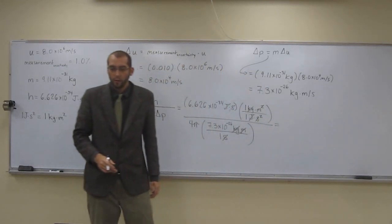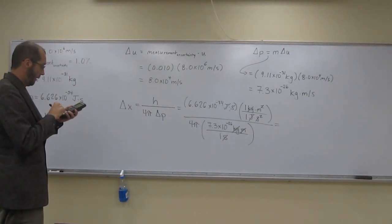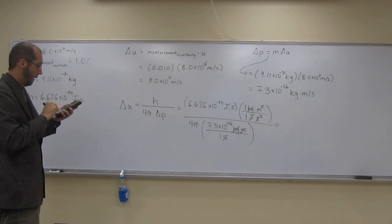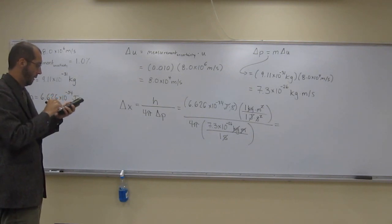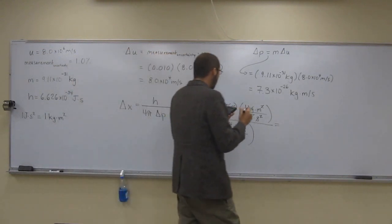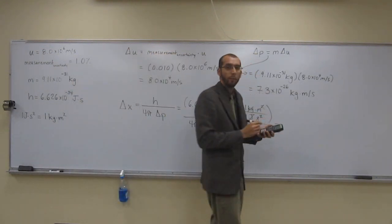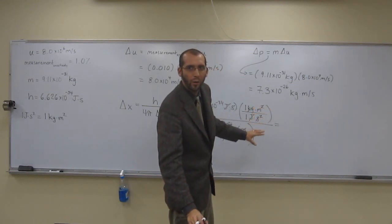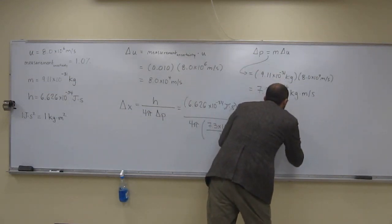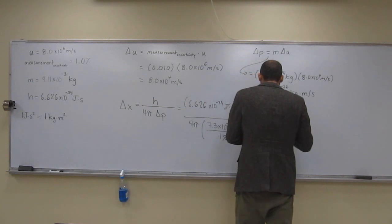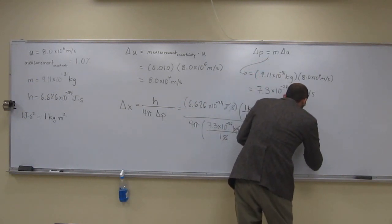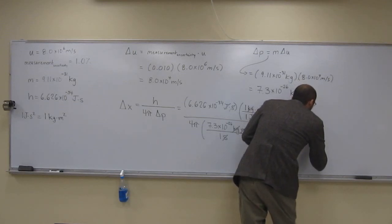So multiply that times 4 times pi. Planck's constant, 6.626. And I'm actually going to put this into picometers so it'll look like a normal number. So this is going to be the two sig figs. So 7.2 times 10 to the negative 10 meters.